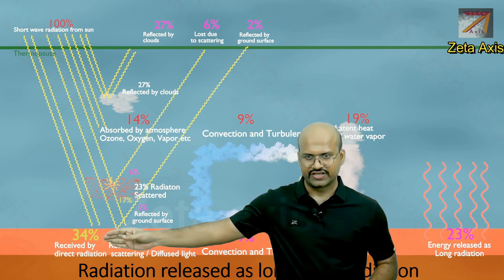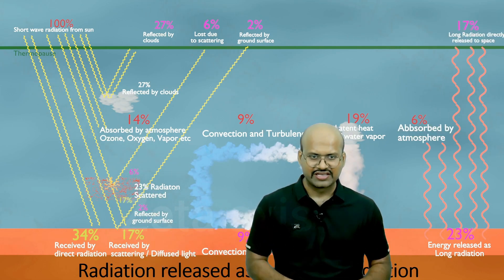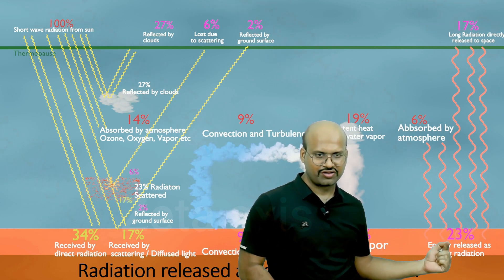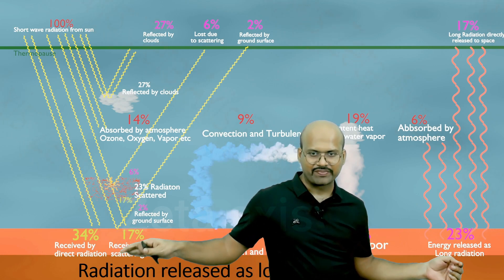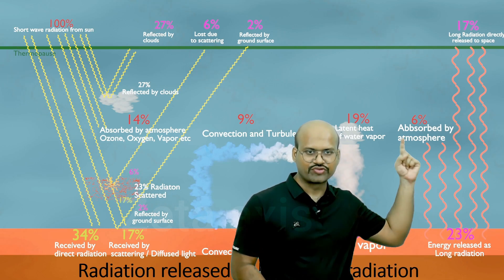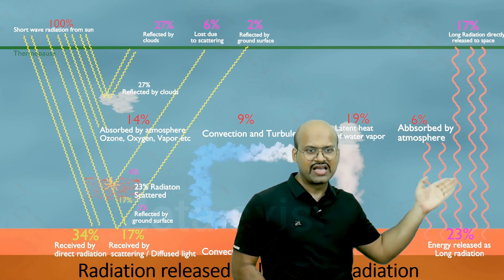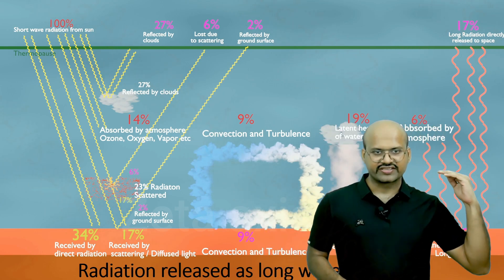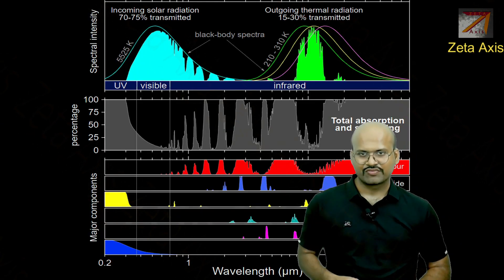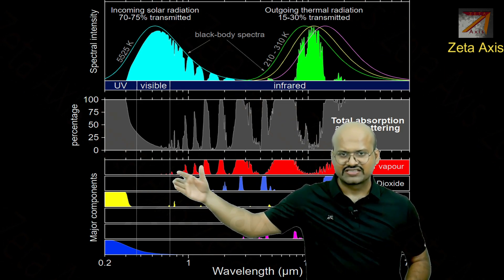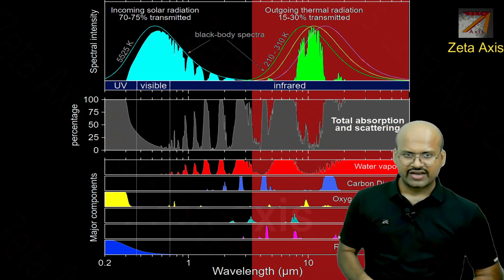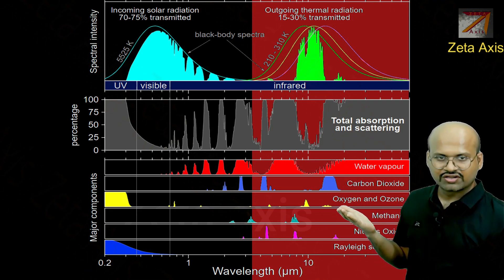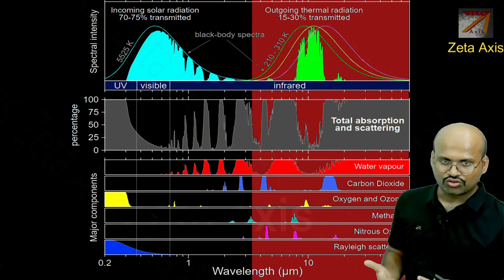Earth, having absorbed heat directly and indirectly from solar radiation, releases it back to the atmosphere and space as longwave radiation. 23% of the total insolation received by Earth is released this way. Of that, 6% is absorbed by the atmosphere and 17% goes directly to space. As seen in the outgoing thermal radiation spectrum, gases such as water vapour, carbon dioxide, oxygen, ozone, methane, and nitrous oxide absorb the outgoing radiation in different proportions.